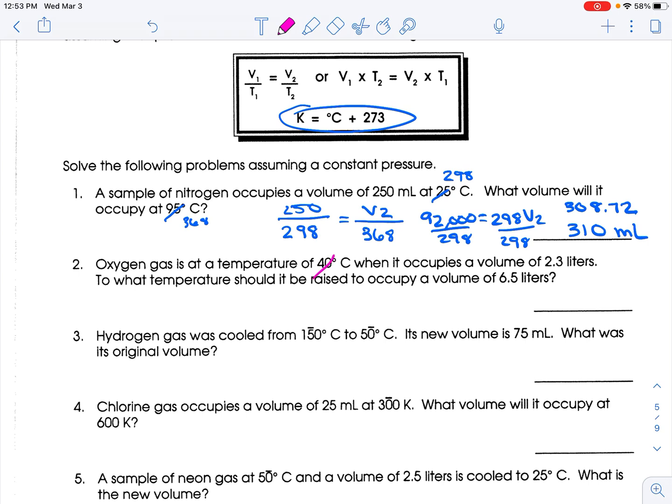40 degrees Celsius. We're going to make that 313 Kelvin, and we're looking for the other temperature. So the volume to start is 2.3, put it over 313. We're looking for our new temperature, and we have 6.5. So 6.5 times 313 is 2034.5 equals 2.3 times T2. Divide both sides by 2.3, and you get 884.56.